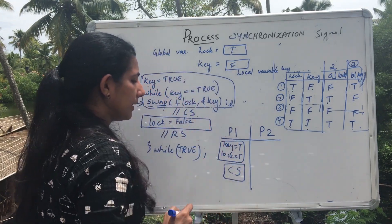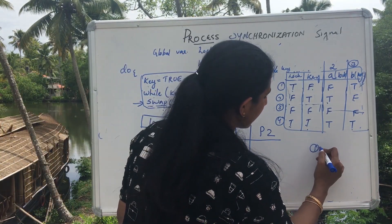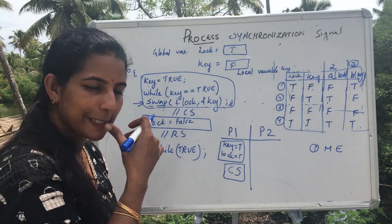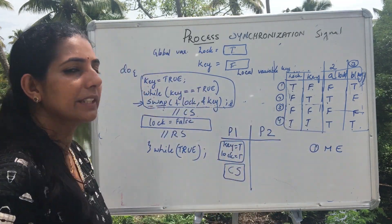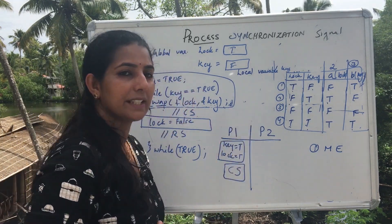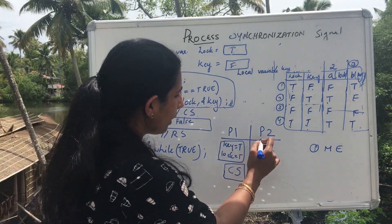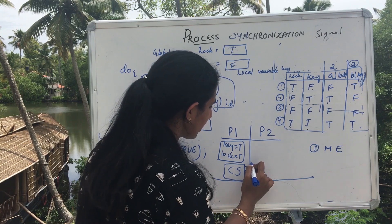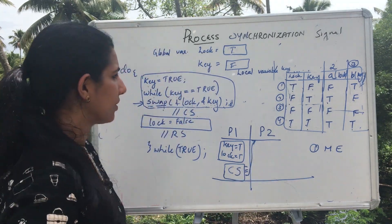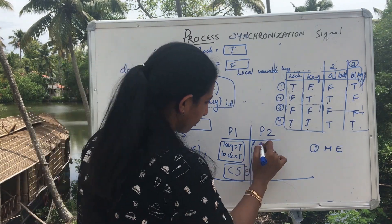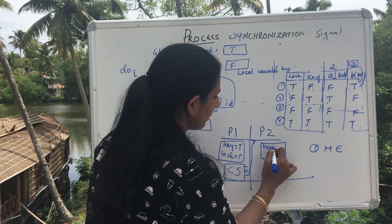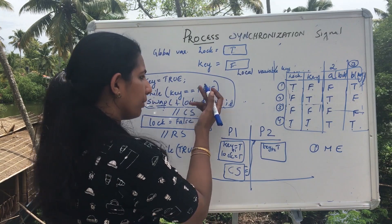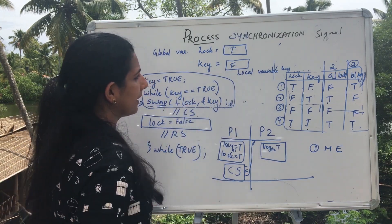According to our critical section problem solution, the first requirement is that mutual exclusion should be maintained — that is, when P1 is in the critical section, no other competing process should be allowed to enter or modify the shared variable. Now let us say P2 is trying to enter the critical section. P2 sets its local key to true. While key of P2 equals true, it enters swap with lock and key. The lock value is currently true. So lock equals true and key of P2 equals true.